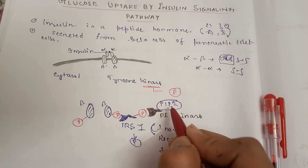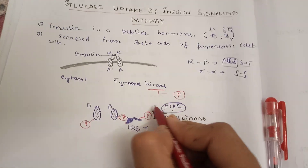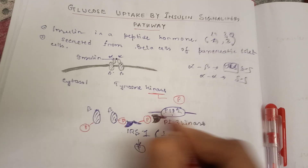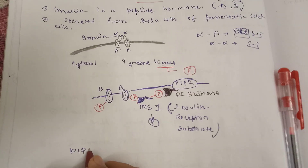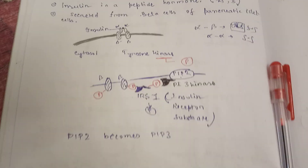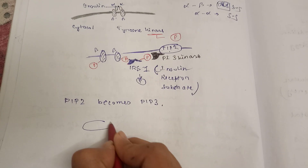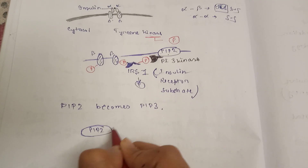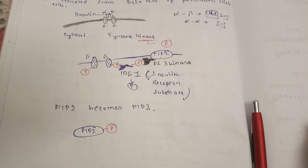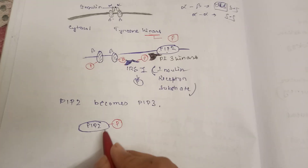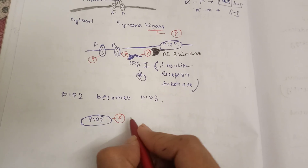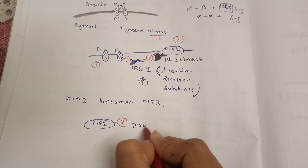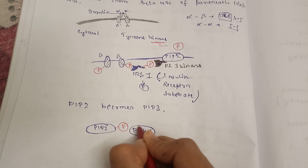PI3 kinase phosphorylates a membrane phospholipid called PIP2. Here is the transmembrane region. PIP2, upon phosphorylation by PI3 kinase, becomes PIP3. PIP3 then serves as a recognition site for another kinase called PDK1.